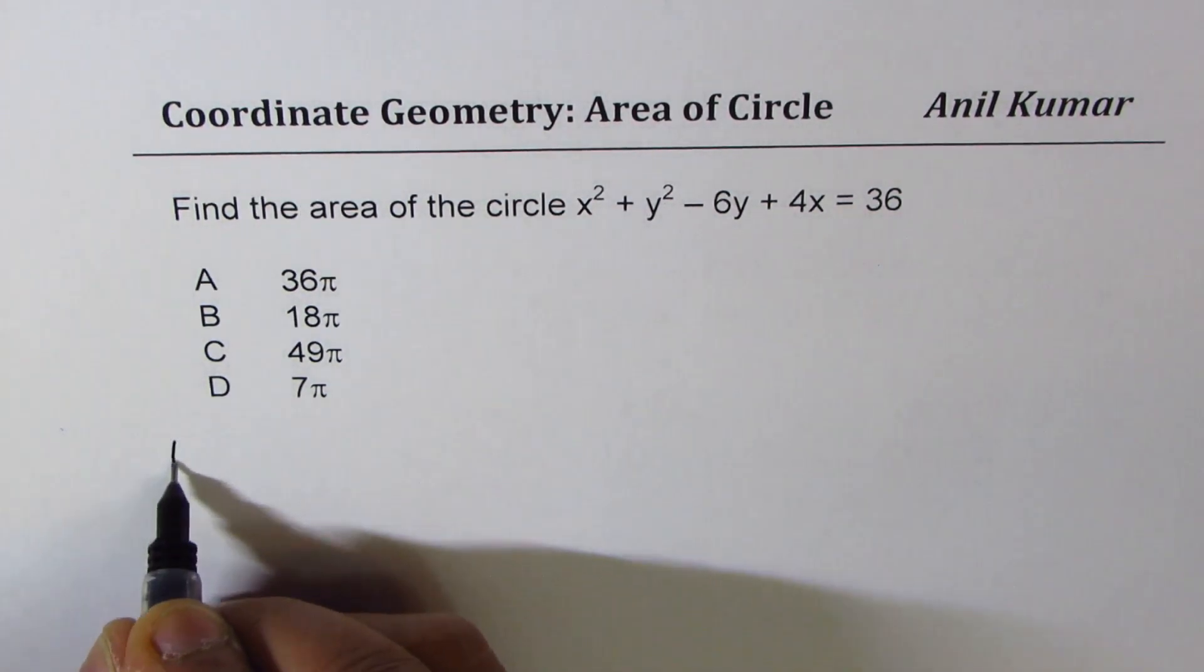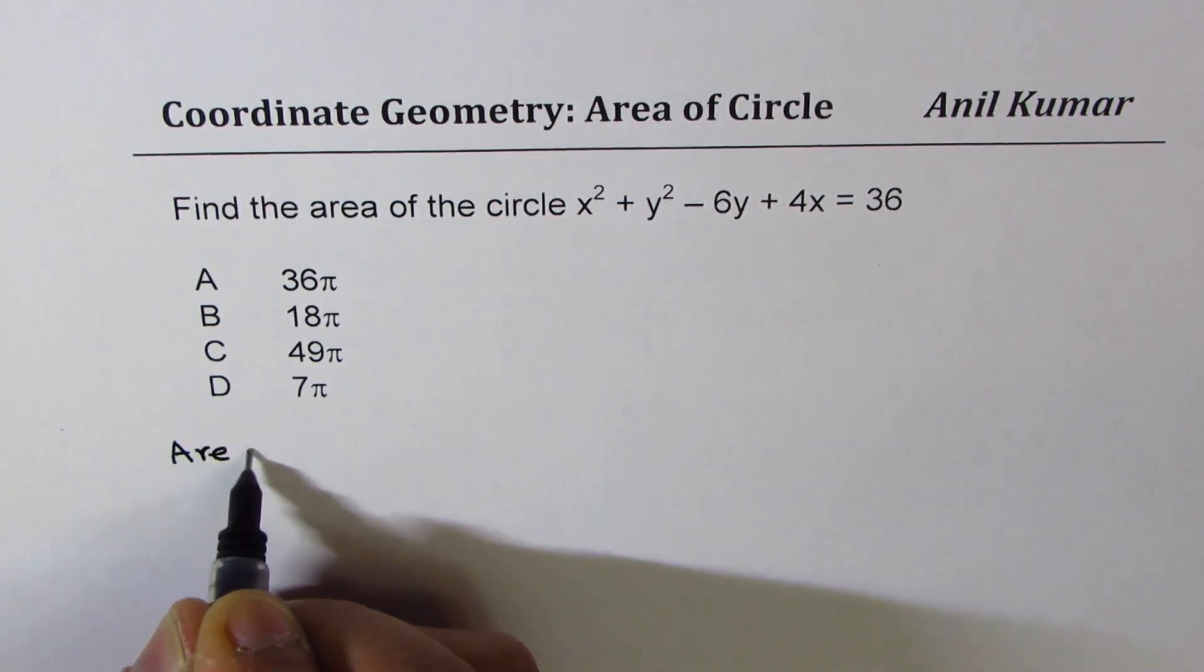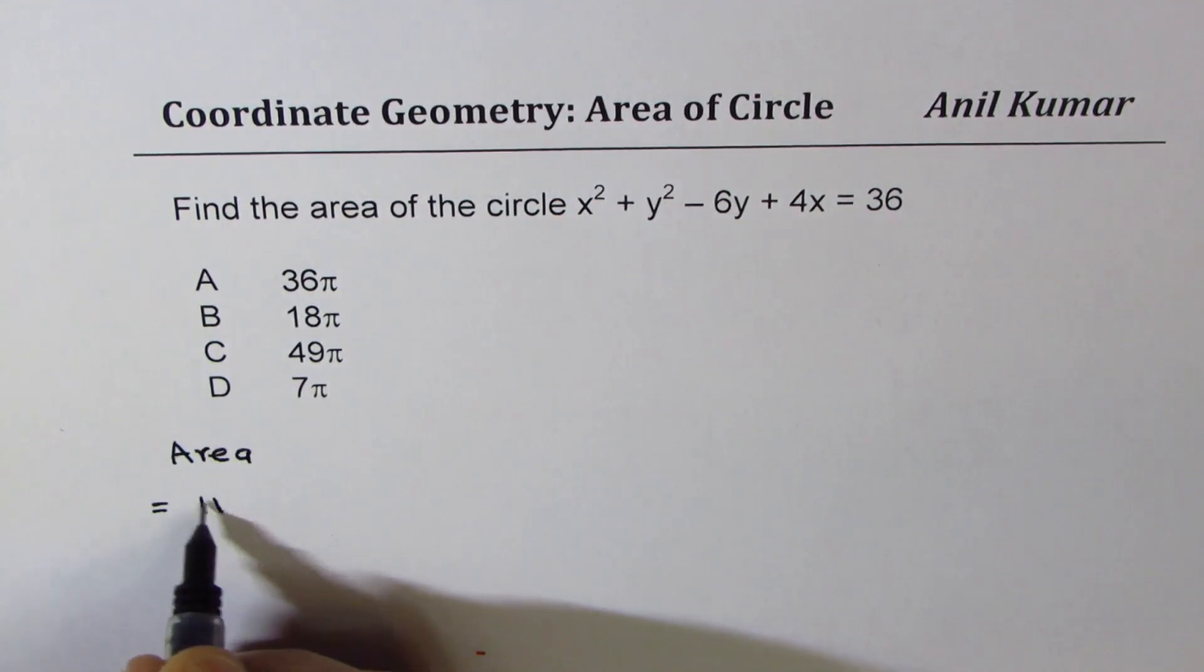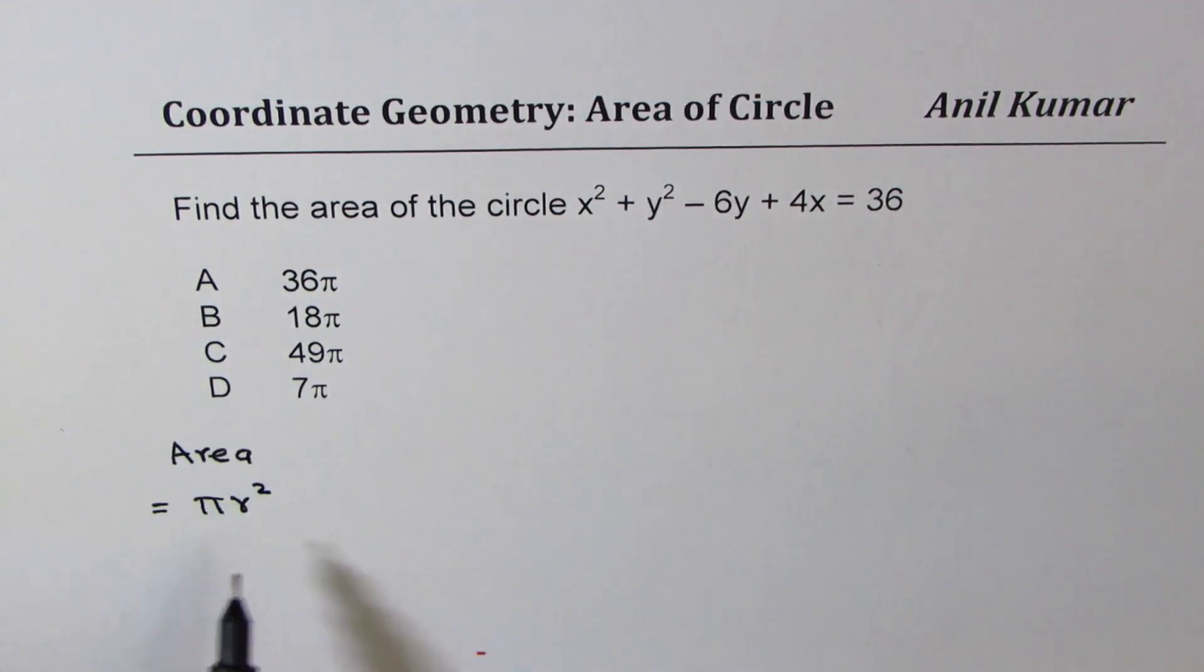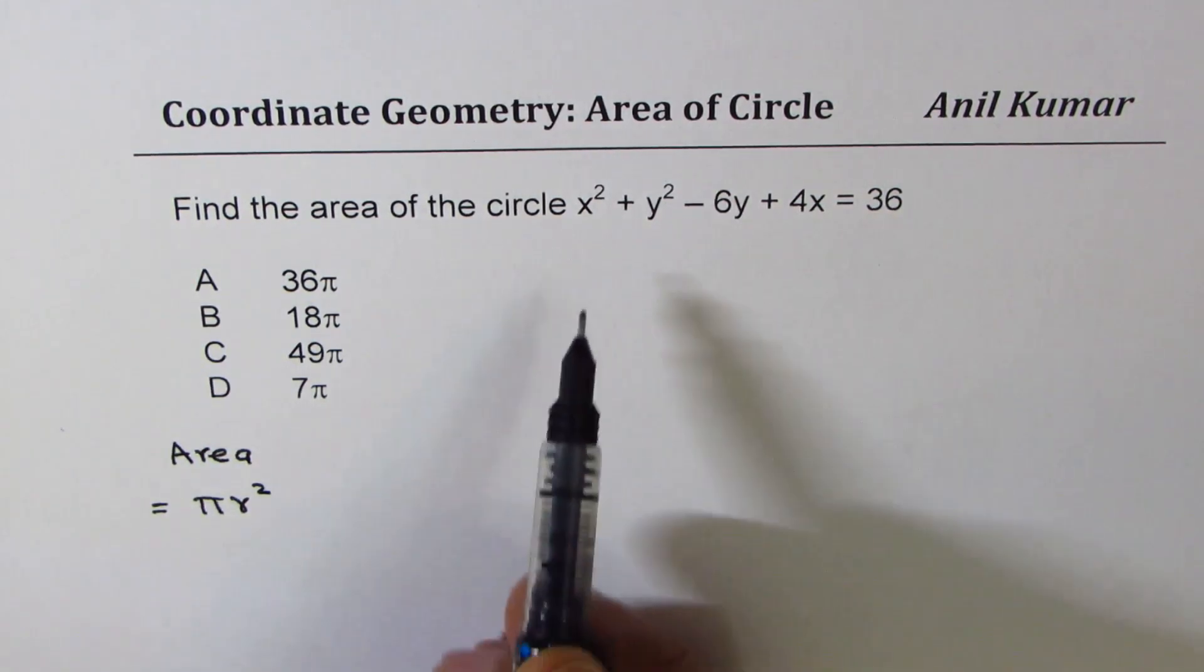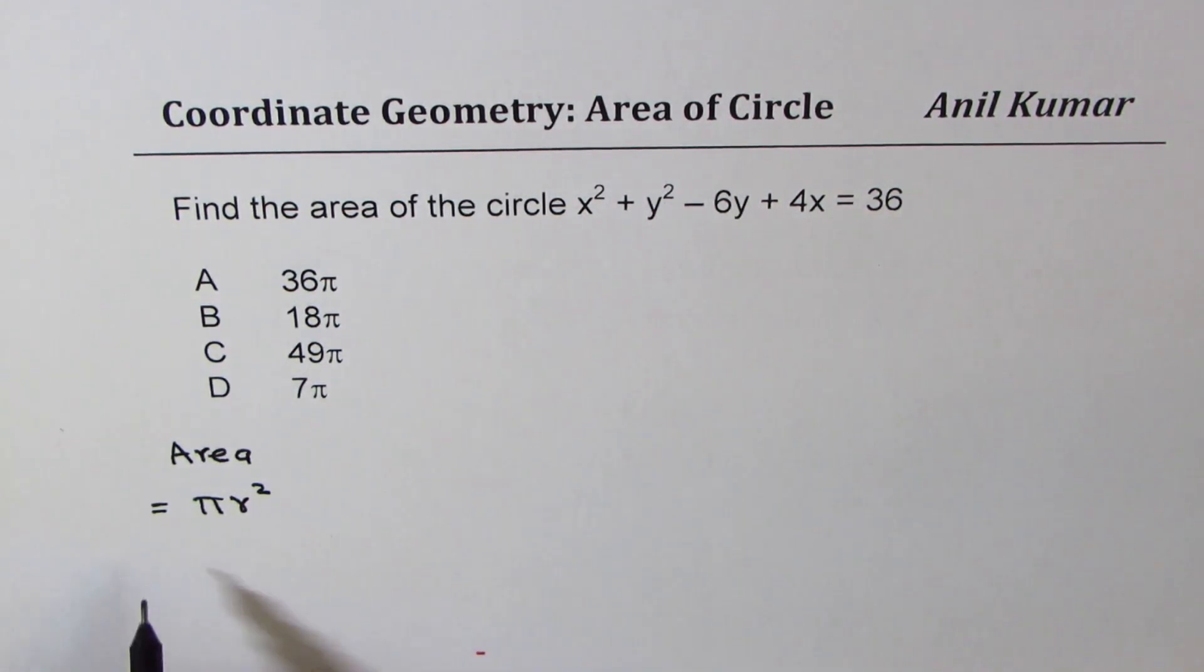Let me give you the formula: area of the circle is equal to πr². So we need to find radius of this circle. We can find radius using the method of completing squares.